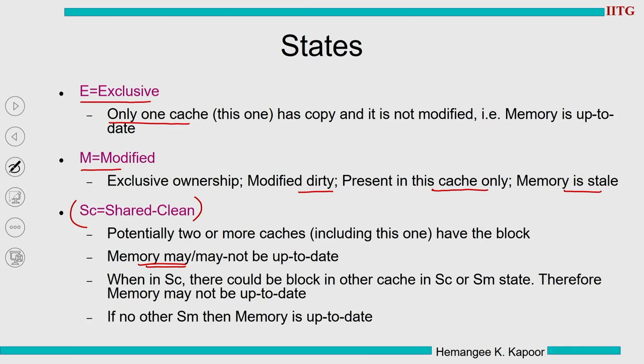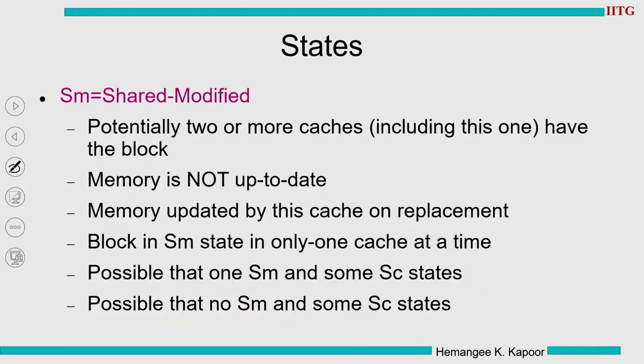Overall, the SC state says that the cache in SC has the most up-to-date data item. When a particular cache is in SC, there could be other caches also in SC, but there could also be a cache in SM state. For now, you can map SC as similar to the S state in the MESI protocol — everybody has a correct, read-only, up-to-date copy.